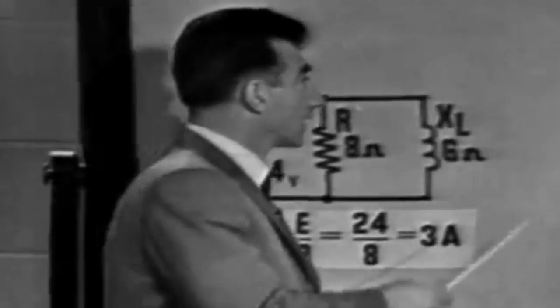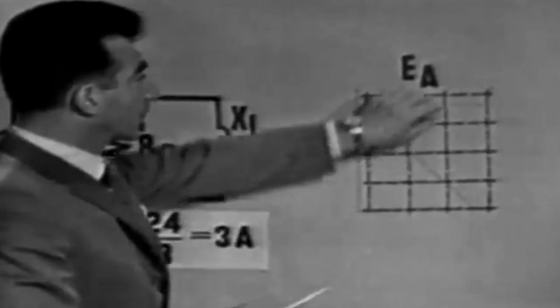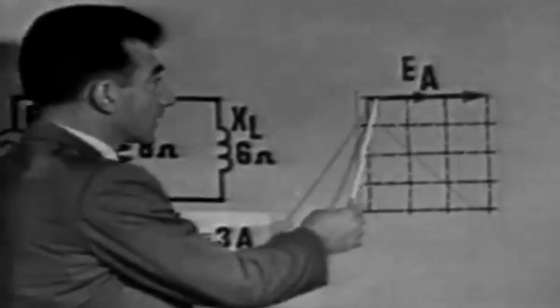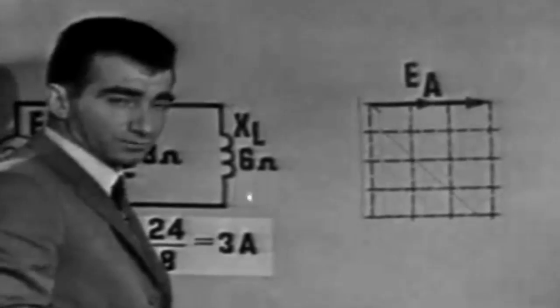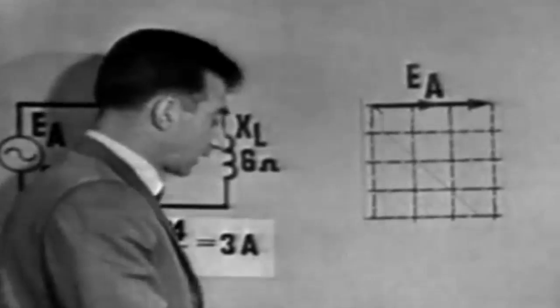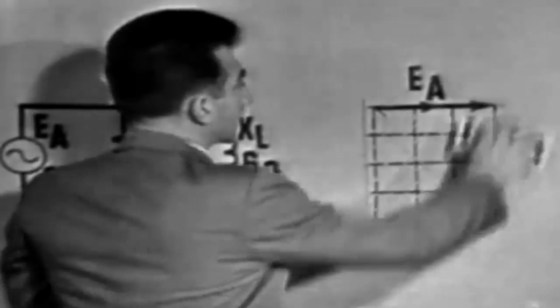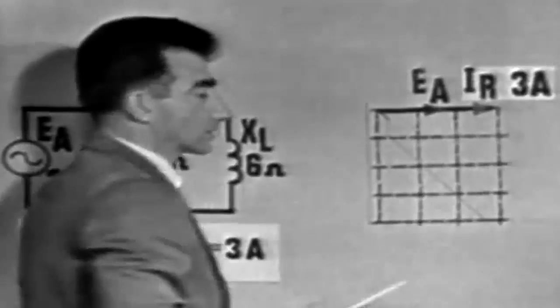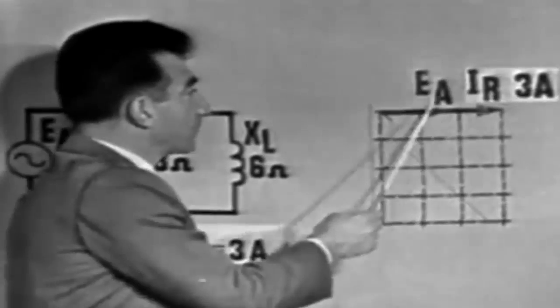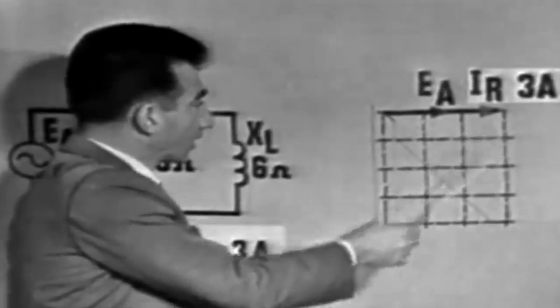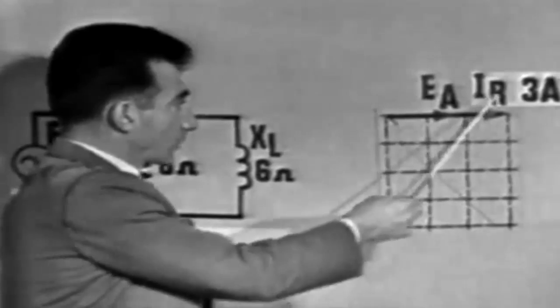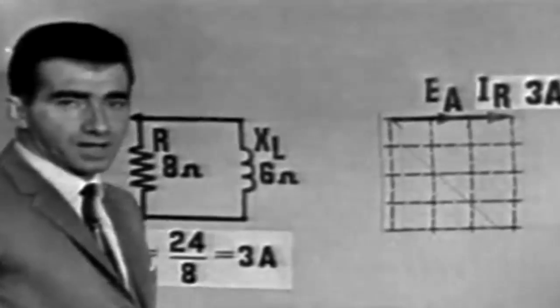Now, if we plot IR on our vector graph, we must show it in phase with EA, because there is no phase shift caused by the resistor. And of course, IR, according to our calculations, is 3 amperes. 3 amperes in phase with EA. And notice we've allotted 3 units on the graph to represent IR of 3 amperes.